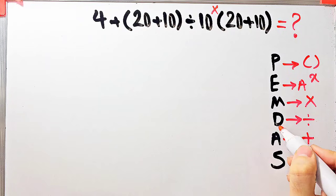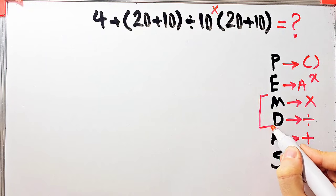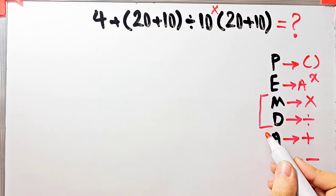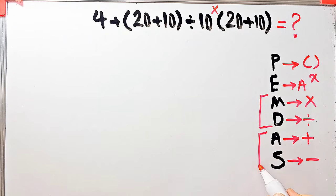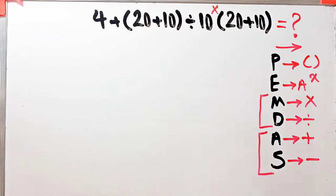As you know, multiplication and division have the same level of priority. Also, addition and subtraction have the same level of priority. When we have both in an expression, we start from the left and simplify.